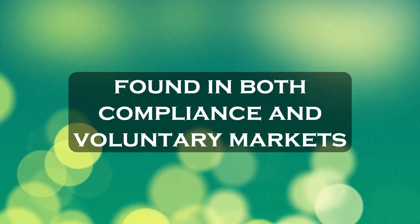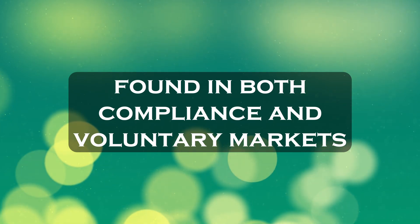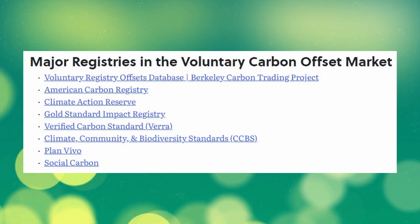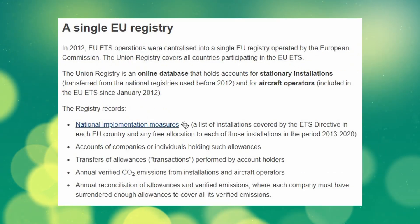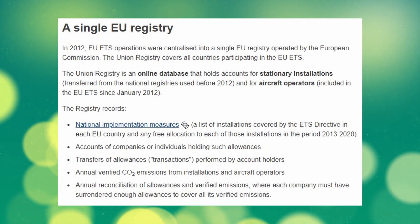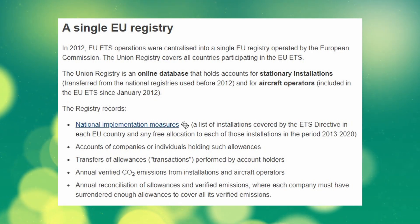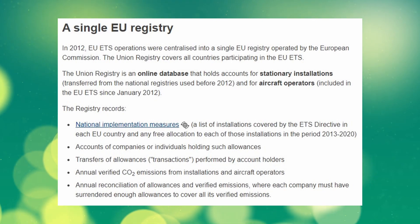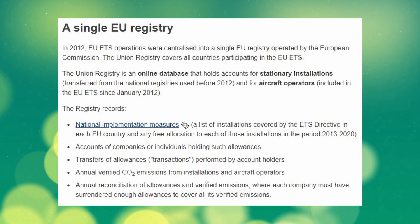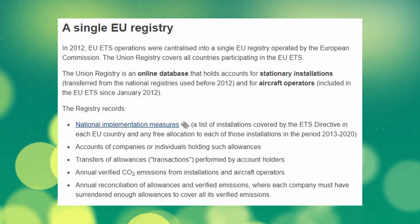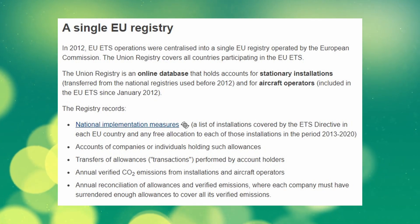Carbon registries can be found in both the compliance and voluntary carbon markets. This video is focused on the registries found in voluntary carbon markets because those are more complex. A registry in the compliance carbon markets just tracks carbon allowances that the system itself has created — a relatively straightforward process. You can think of the union registry in the European Union Emissions Trading System as an example, which creates its own allowances and disperses those to market participants in the EU.